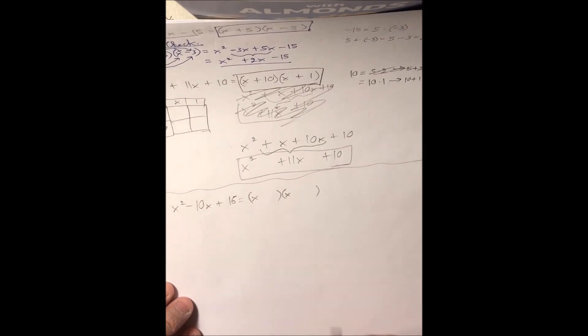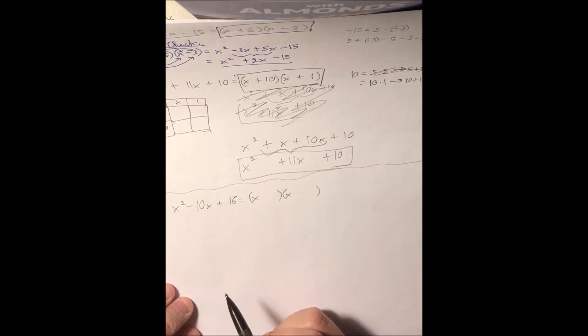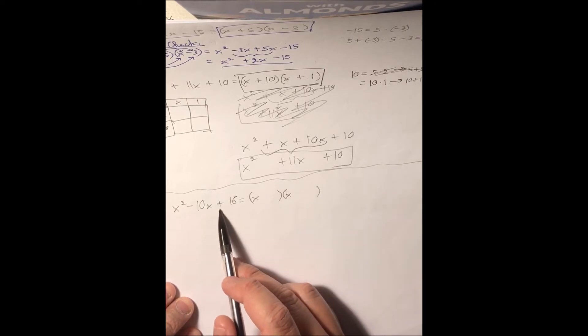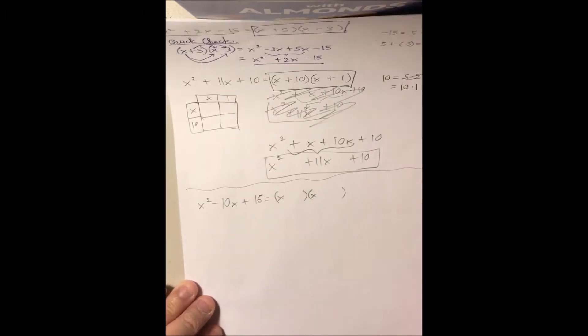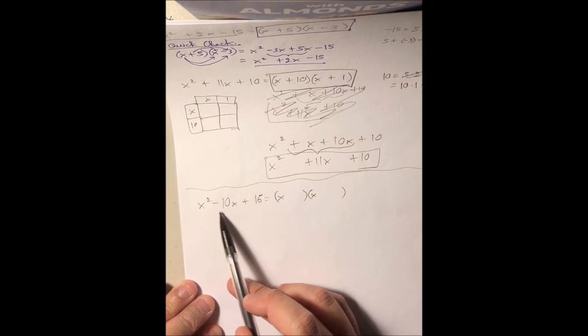Now we look at the last term, positive 16. We want to come up with two numbers that multiply together to give us back positive 16, but also add together to give us back the second coefficient, negative 10.